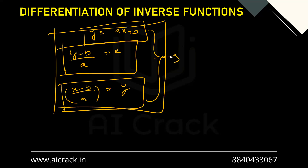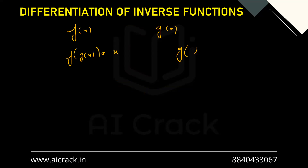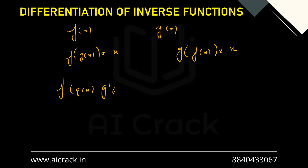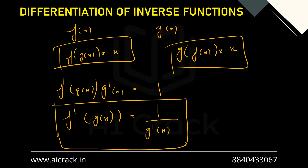Let f(x) and g(x) be inverses of each other. By inverse function properties: f(g(x)) = x and g(f(x)) = x. Differentiating f(g(x)) = x using the chain rule: f'(g(x))·g'(x) = 1, so f'(g(x)) = 1/g'(x). Similarly from the other: g'(f(x))·f'(x) = 1, so g'(f(x)) = 1/f'(x). We use whichever form fits the question.